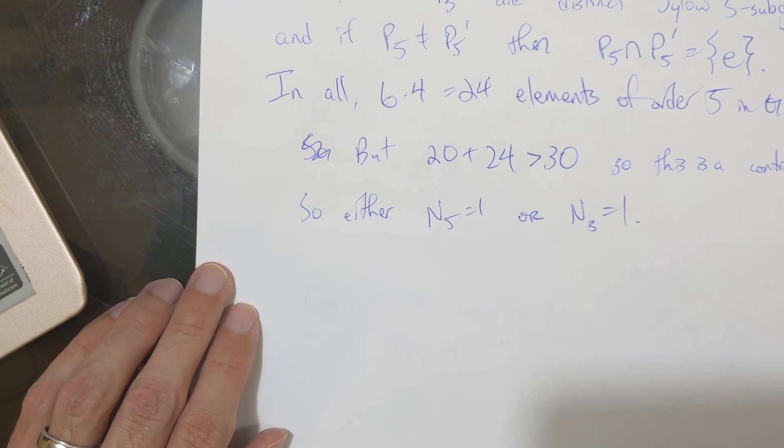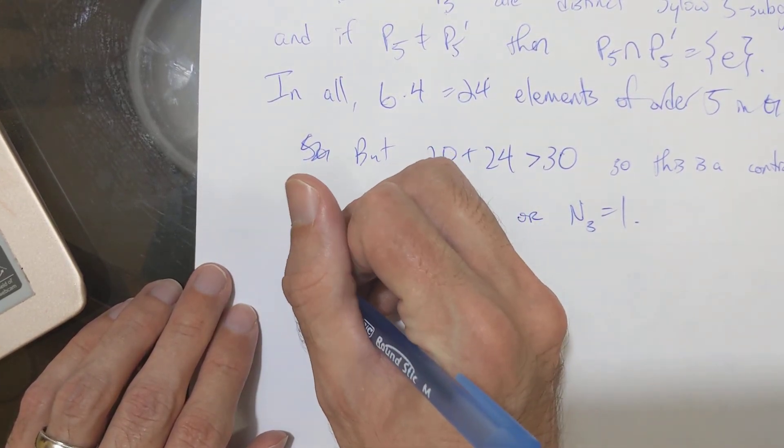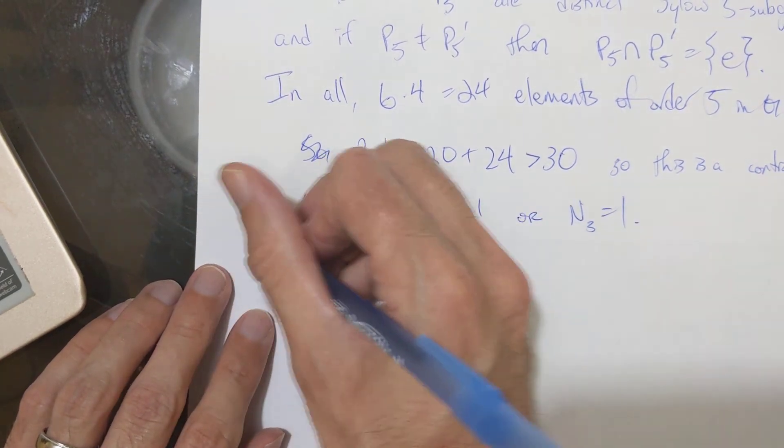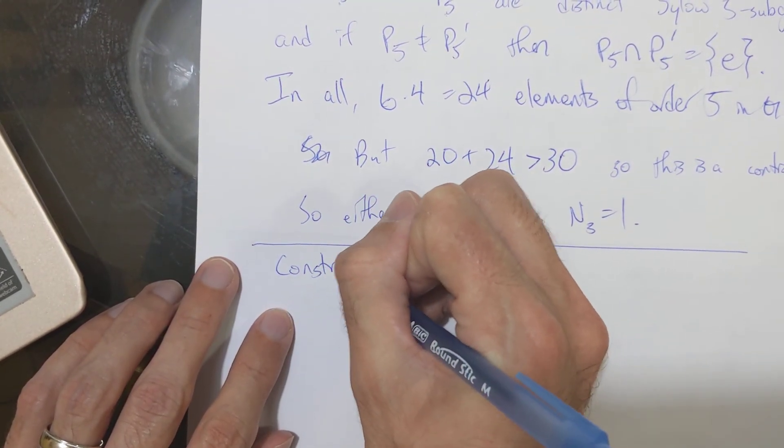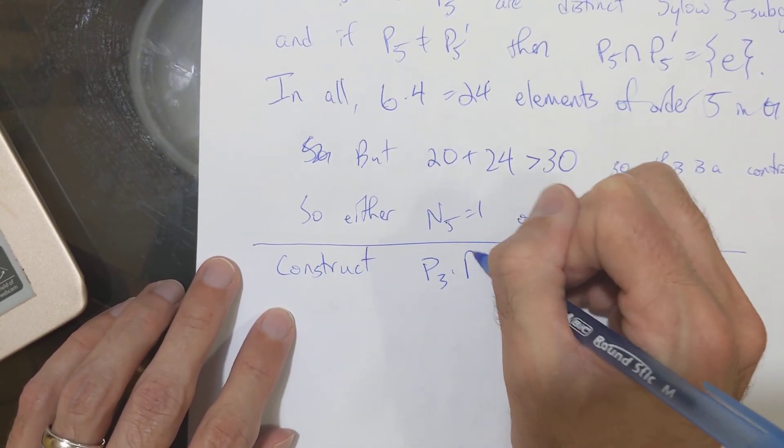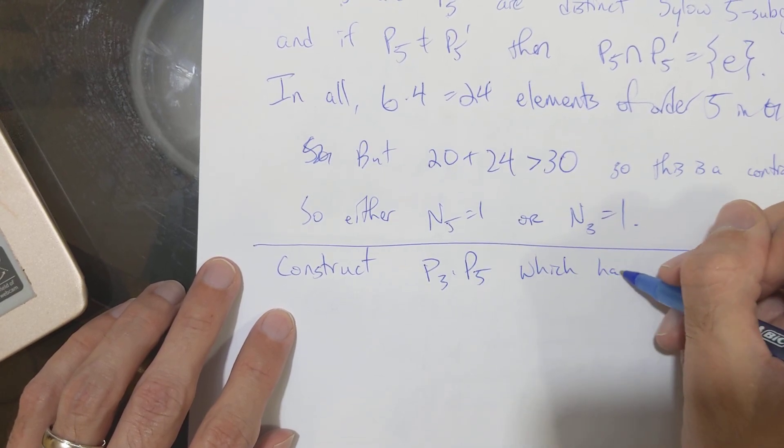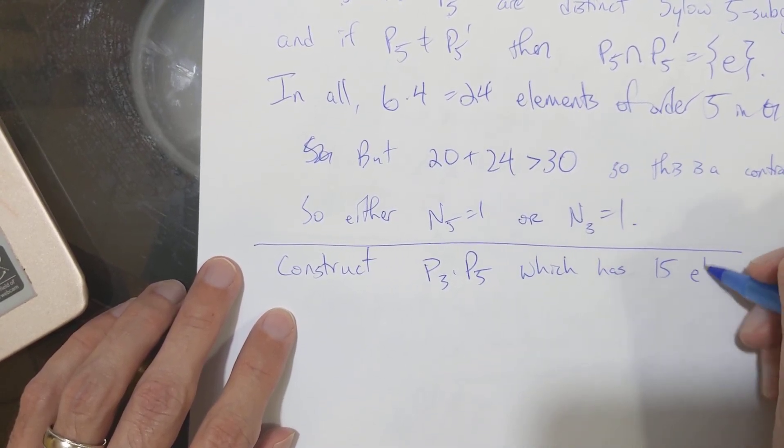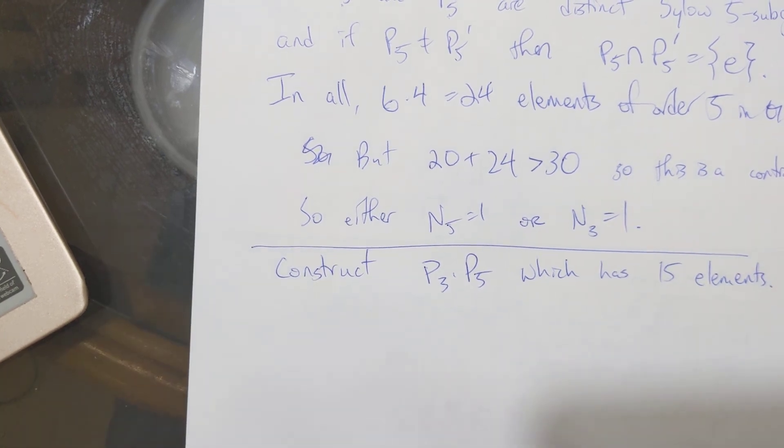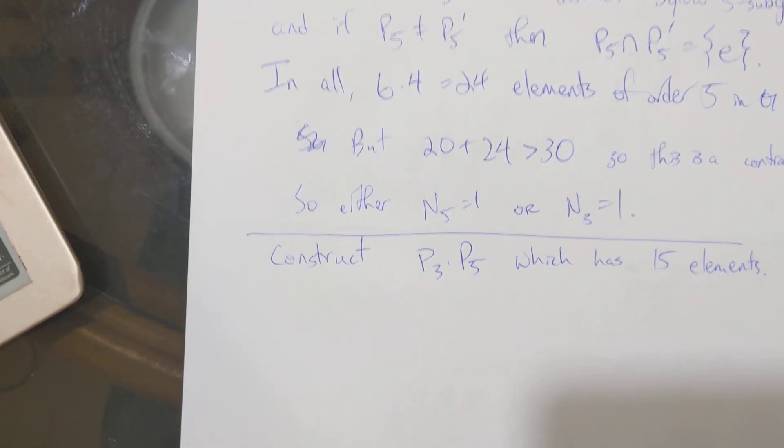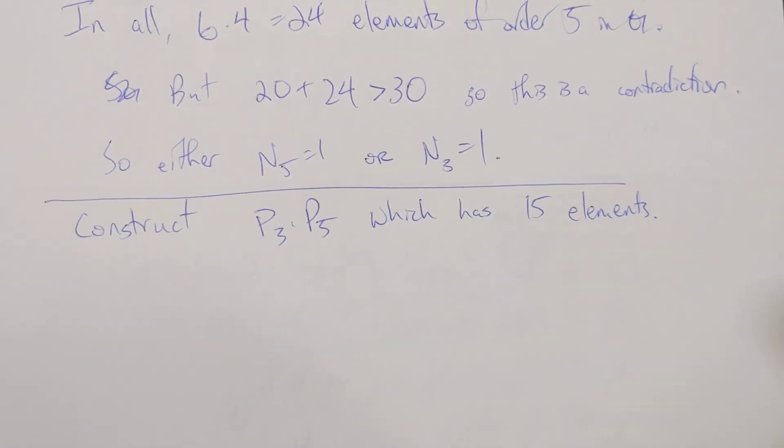Okay. So let me stop the video there. And then in just a part two of this video, we want to show that we want to construct the subgroup P3 times P5, which will have 15 elements. Okay. Thank you for taking the time to watch. Bye.